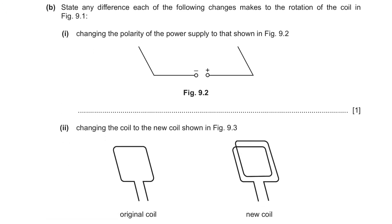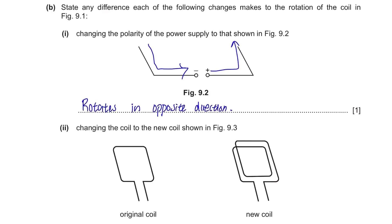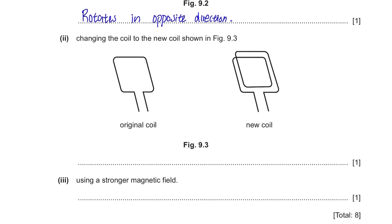Part B: State the difference each change makes to the rotation. Changing the polarity of the power supply means the current will start travelling in the opposite direction, so the rotation will occur in an opposite direction. Changing the coil to the new coil with two loops instead of one will make the coil turn faster — more coils means greater turning effect. Using a stronger magnetic field will also make the coil rotate faster. You can increase speed with a stronger magnetic field, a stronger current, or more coils.